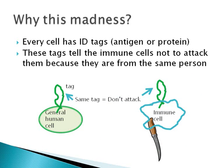Don't we know that the donor cell is supposed to help us? Then why this madness? To answer this question, let me briefly describe the workings of the immune system. Every cell has ID tags showing literally the name of its owner. These tags are known as antigens, which are nothing but a special kind of protein, and they are on the outer surface of the cell. The tags displayed by the cells of an individual are all the same. This is how the immune system recognizes self from non-self and avoids attacking our own cells.